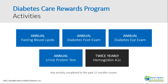The program activities include an annual fasting blood lipid test, an annual diabetes foot exam, an annual eye exam, an annual protein test, and twice yearly completion of the HbA1c. Any of these activities completed in the last 12 months will count towards your program requirements, with the exception of the A1c, which is required twice a year. Depending on your employer, you may also need to complete an annual phone conversation with one of our Good Health Gateway diabetes educators.